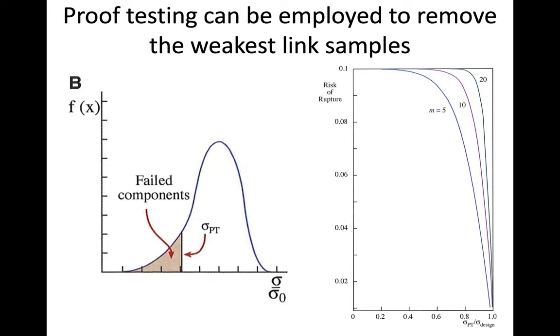The idea is ceramics can break at pretty low stress values if they have a flaw at the right position or a flaw that's very large. Basically, proof testing is taking your set of materials that you want to strengthen and subjecting it to some predetermined proof testing stress level at the low end. By subjecting it to this stress, all of those that are the weakest samples will just break.